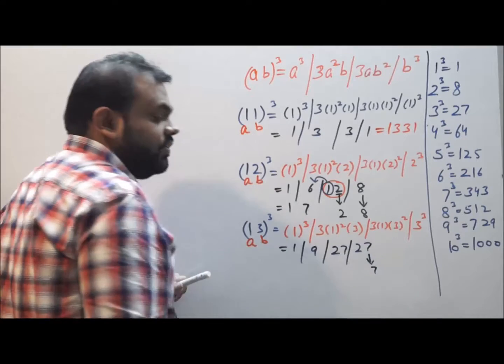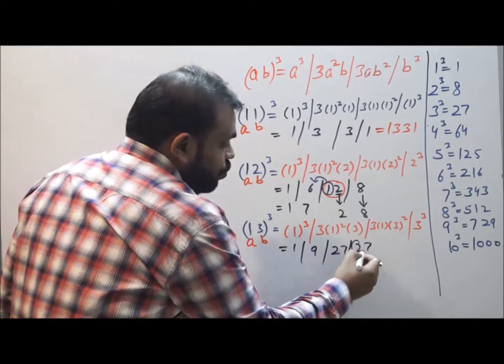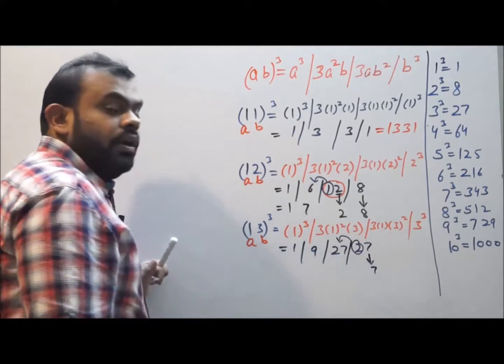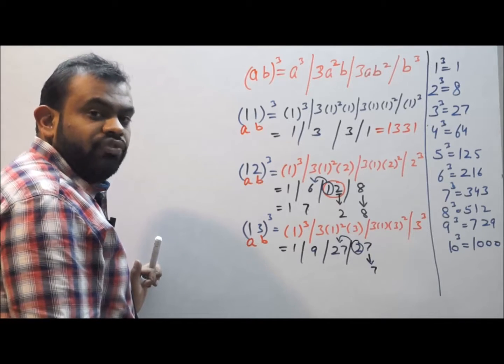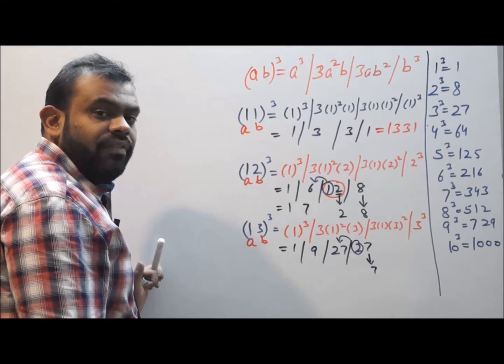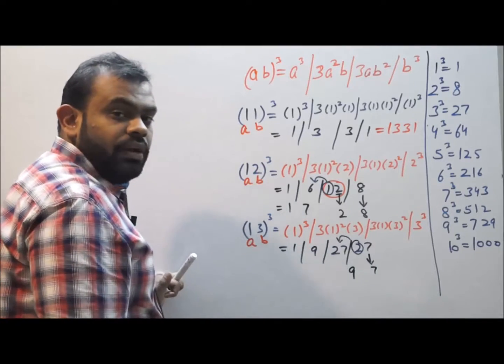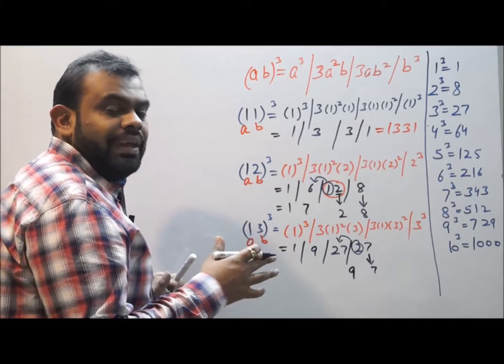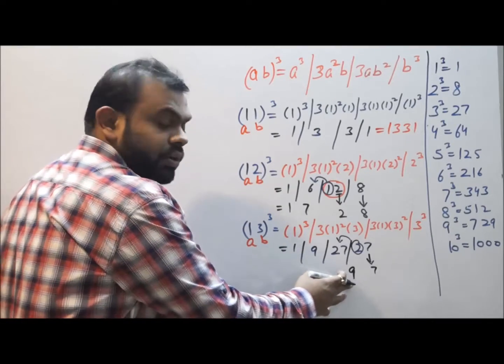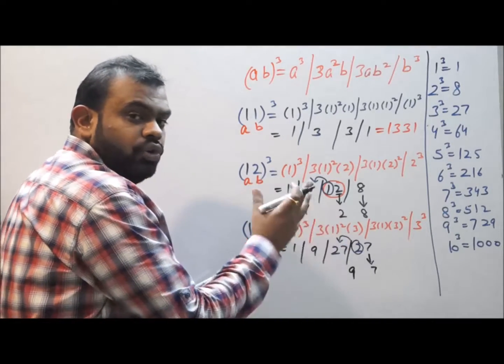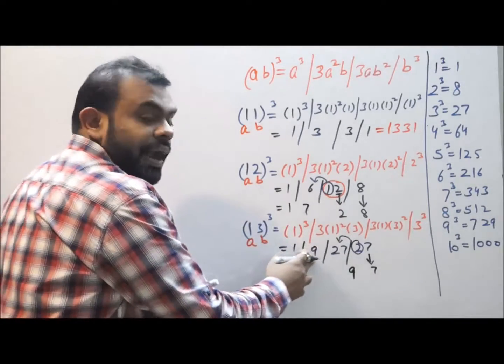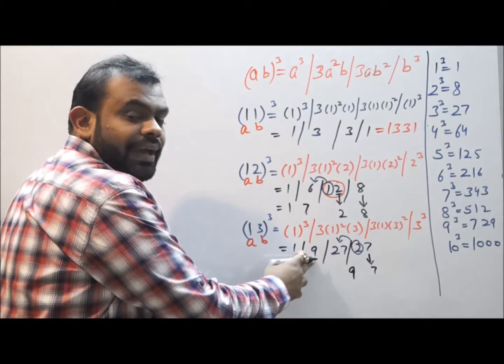Now noting down the units place, that is 7, putting this 2 as a carry over here, 27 + 2 gives me 29, which is having the unit digit as 9. So putting 9 over here, and the remaining part, that is for 29, I have put 9 over here. Now 2 goes on and gets added with 9.